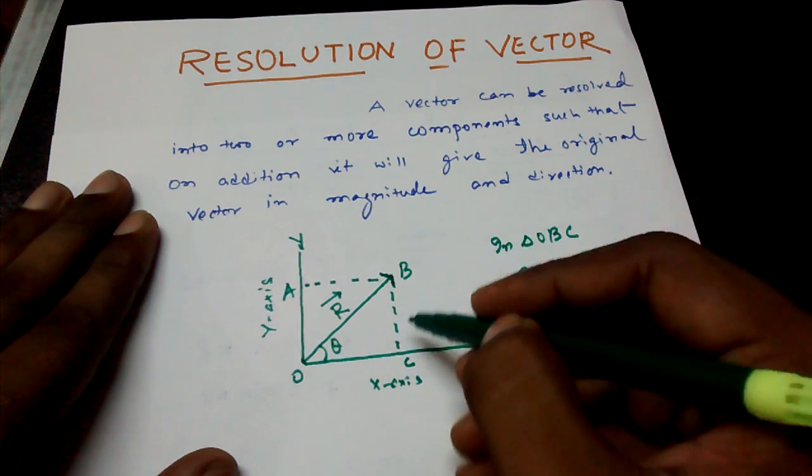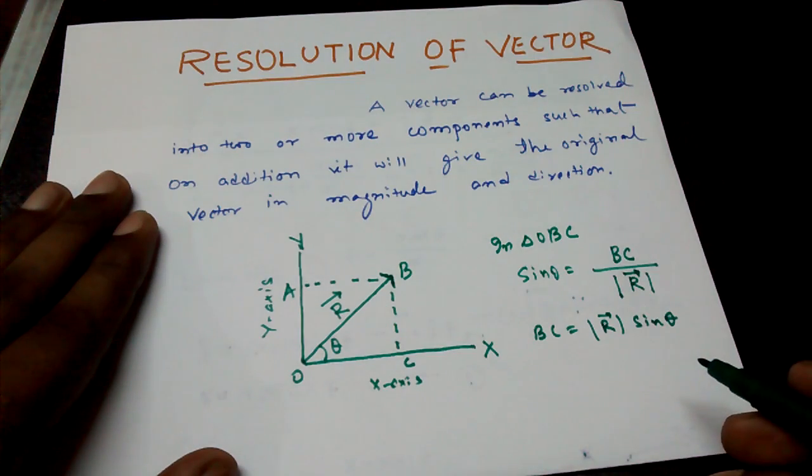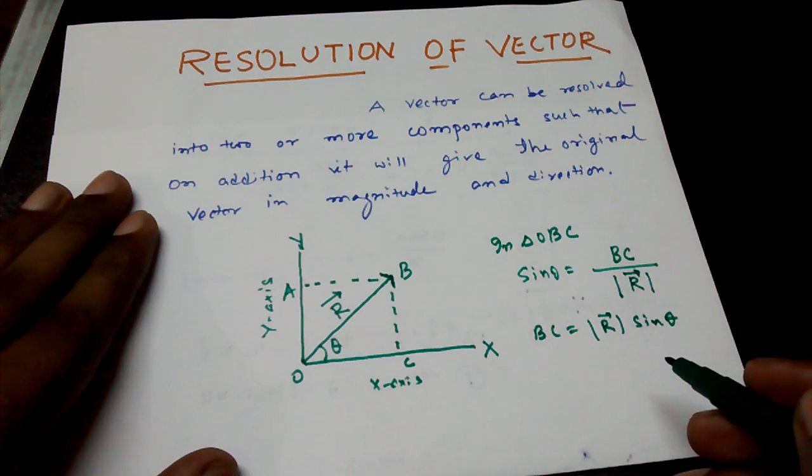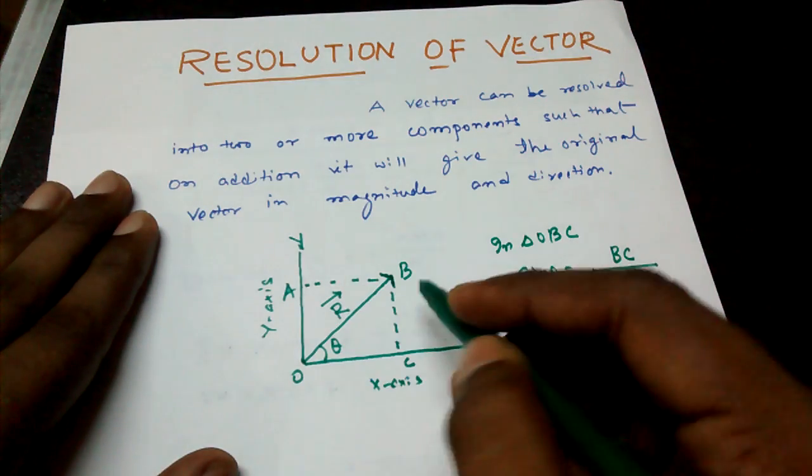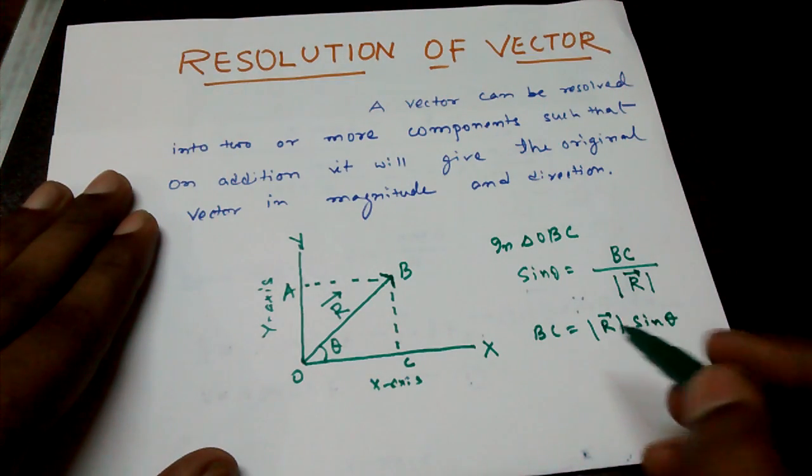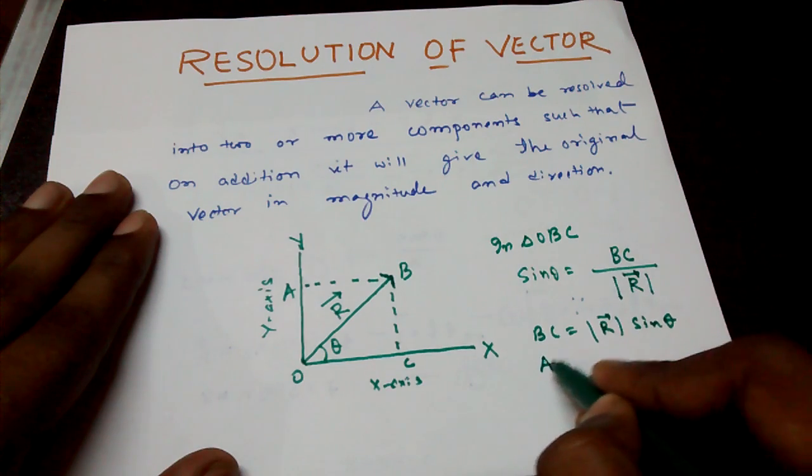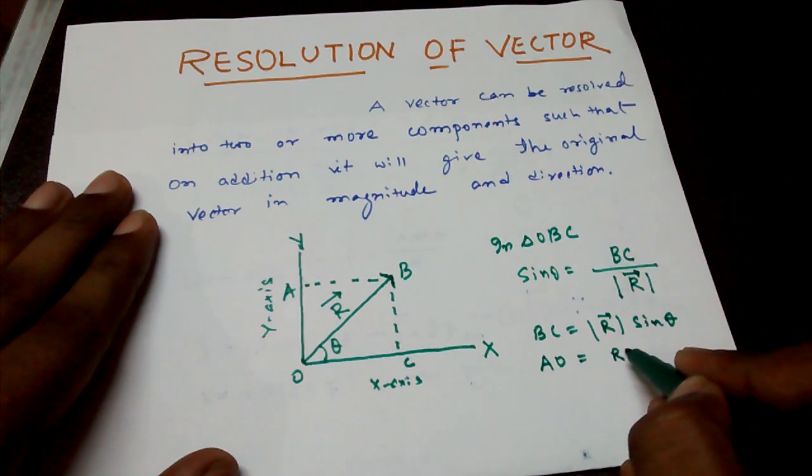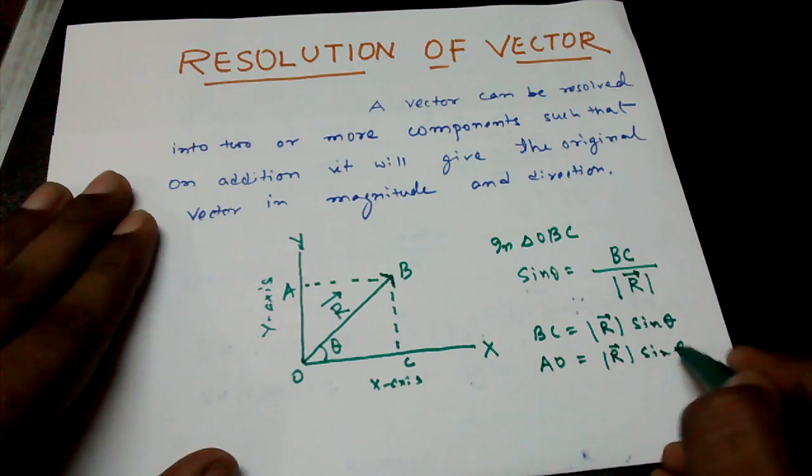BC. What is BC? BC must be equal to AO. From geometry it could be written. So here I am putting AO is equal to R sin theta.